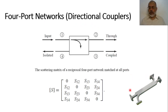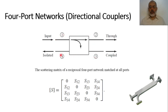This is an example of a general directional coupler. Here is the input port, here is the output port, here is the coupled forward port, and here is the coupled backward port. We can represent such a directional coupler as a 4-port network: Port 1, Port 2, Port 3, and Port 4.